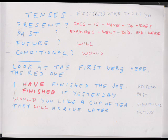Let's have a look at this chart of the four basic tenses. The present — examples: goes, is, have, do, does. Past — examples: went, did, had, were. Future: will. Conditional: would.